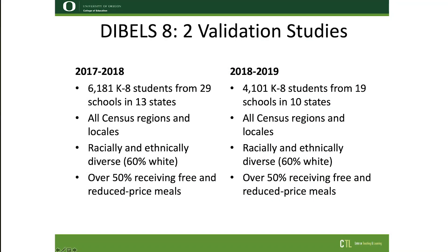How large and representative was the DIBELS 8th Edition sample? Our initial evidence for DIBELS 8th Edition was collected from more than 6,000 students in grades K-8 across the U.S. Students came from over 29 schools in 13 states drawn from all four census regions. We intentionally recruited in this manner so that we could represent the racial, ethnic, and socioeconomic diversity of the U.S. Our sample therefore closely aligns with the most recent NCES data about demographics of U.S. school children in grades K-8.